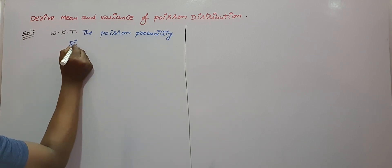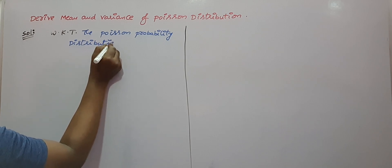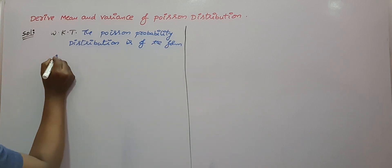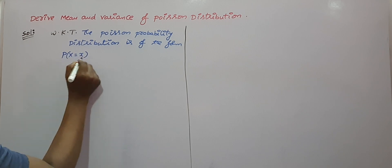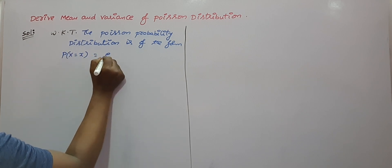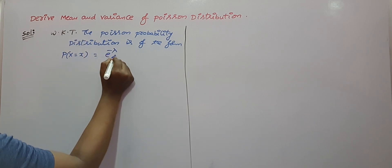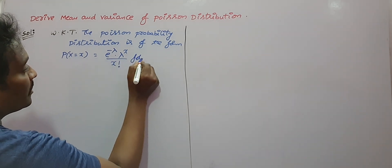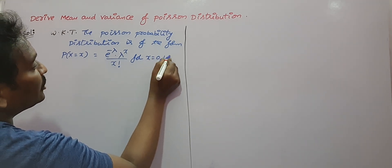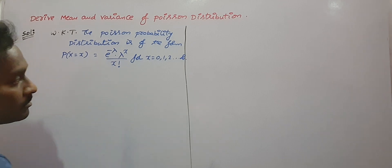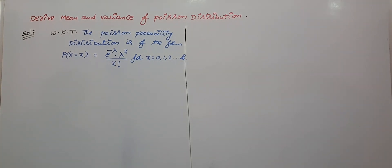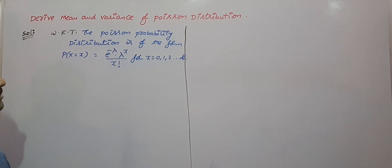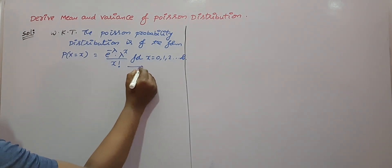The Poisson probability distribution is of the form: P(X = x) = e^(−λ) · λ^x / x!, for x = 0, 1, 2, and so on up to infinity. Here x takes infinitely many values, whereas in the binomial distribution, x takes only a finite number of values. That is the key difference between binomial and Poisson distribution. Take this as equation number one.